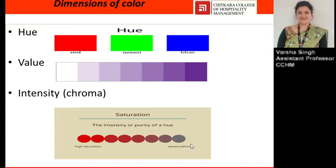The third dimension is intensity, which is also known as chroma. It indicates the brightness or dullness of a particular color, or we can say the strength or weakness of a color. In other words, it is a property describing the distance of a color from gray or neutralizing, which is why it indicates brightness or dullness.